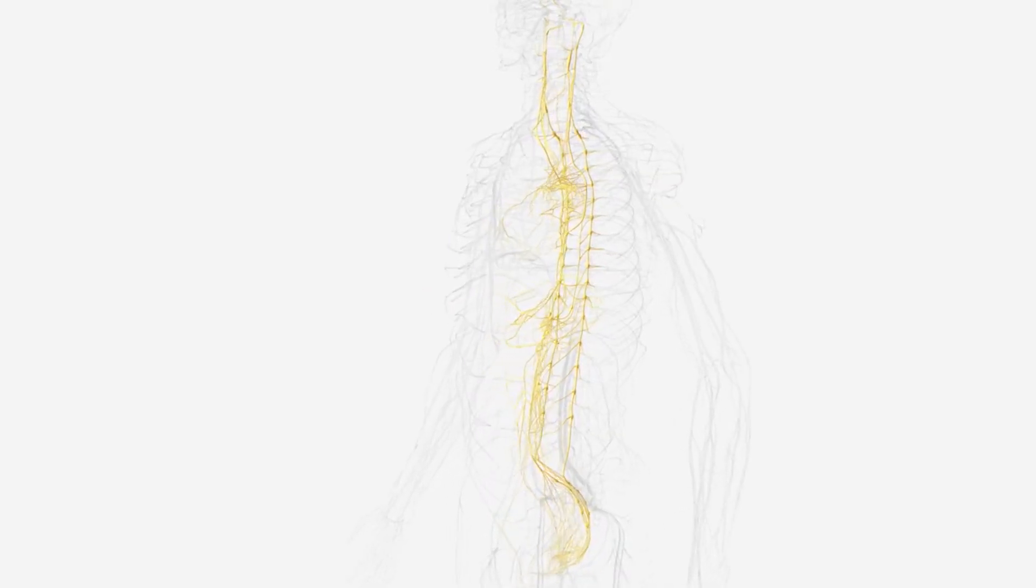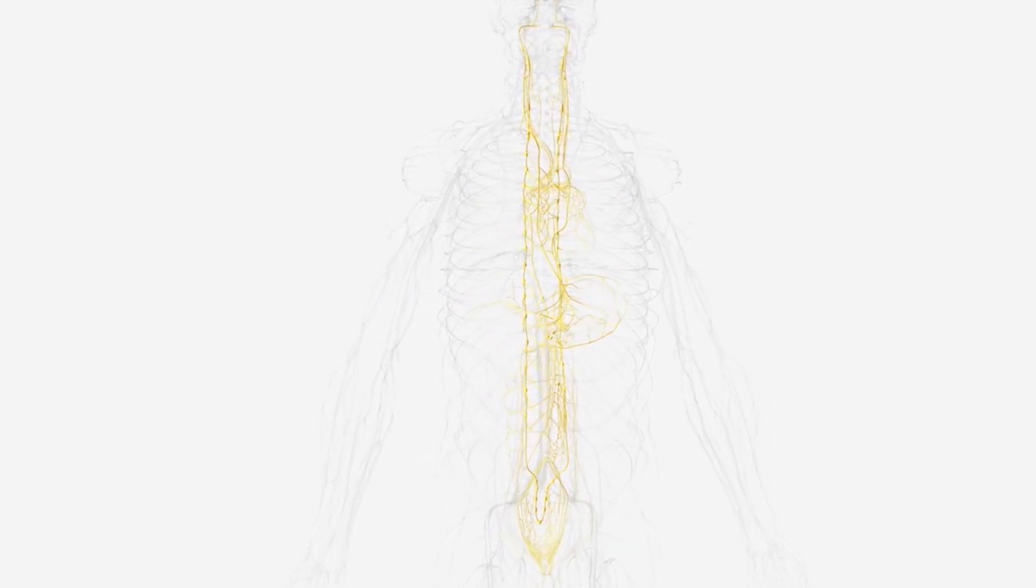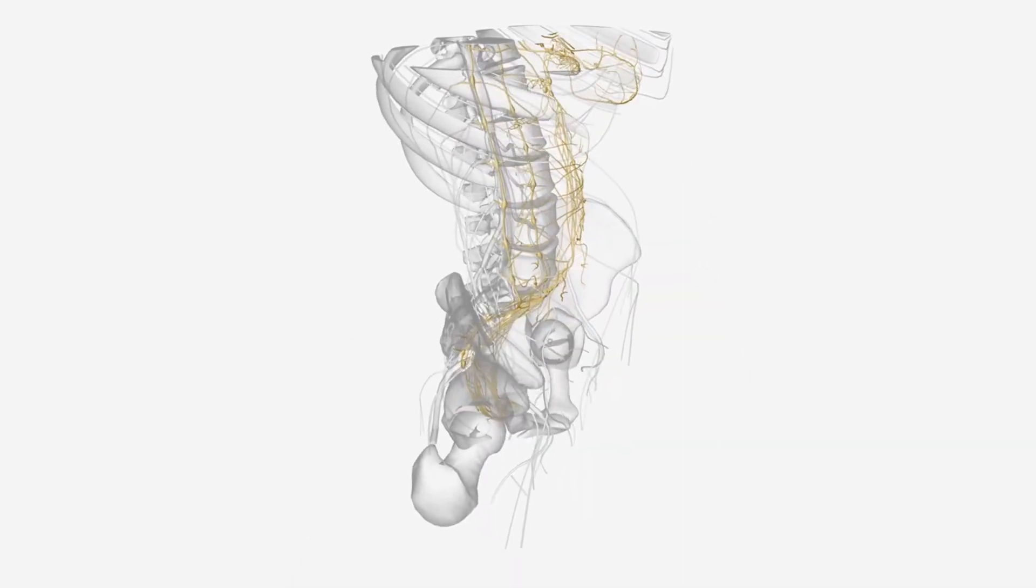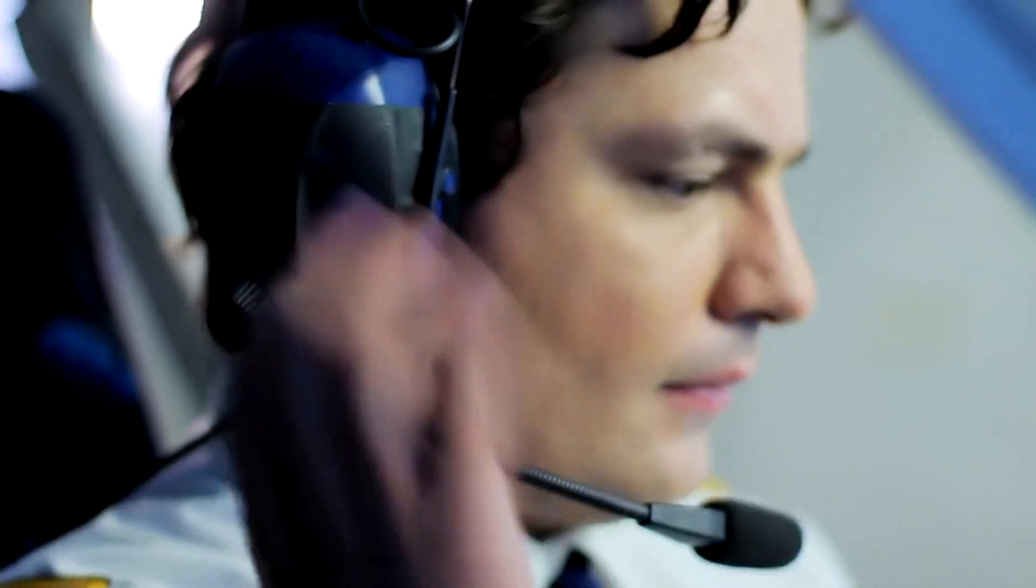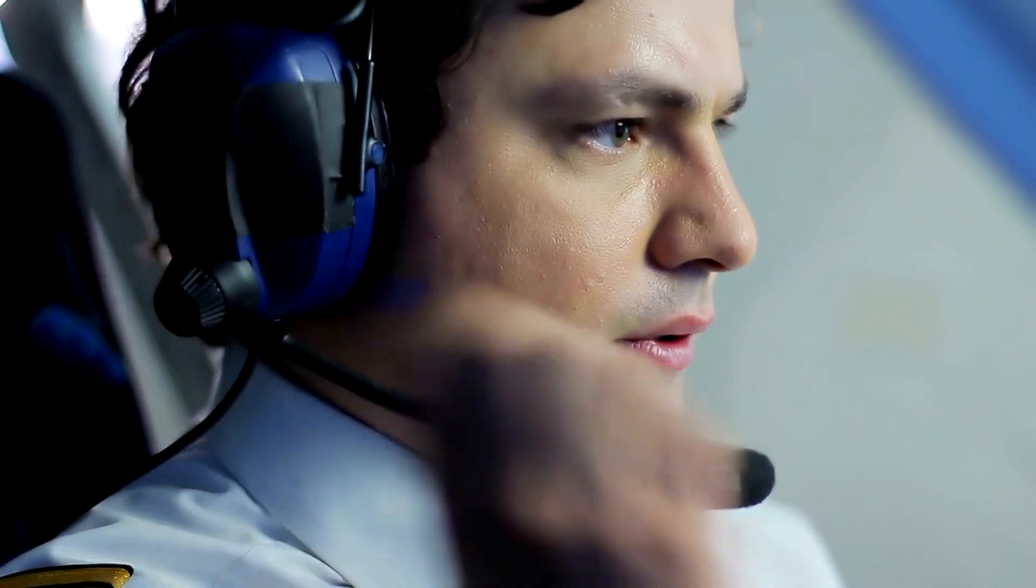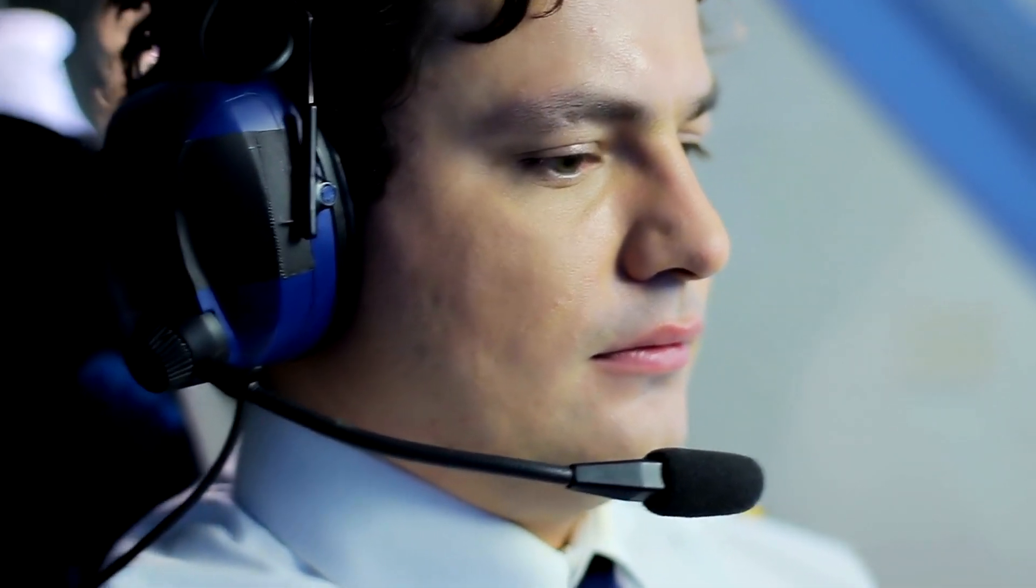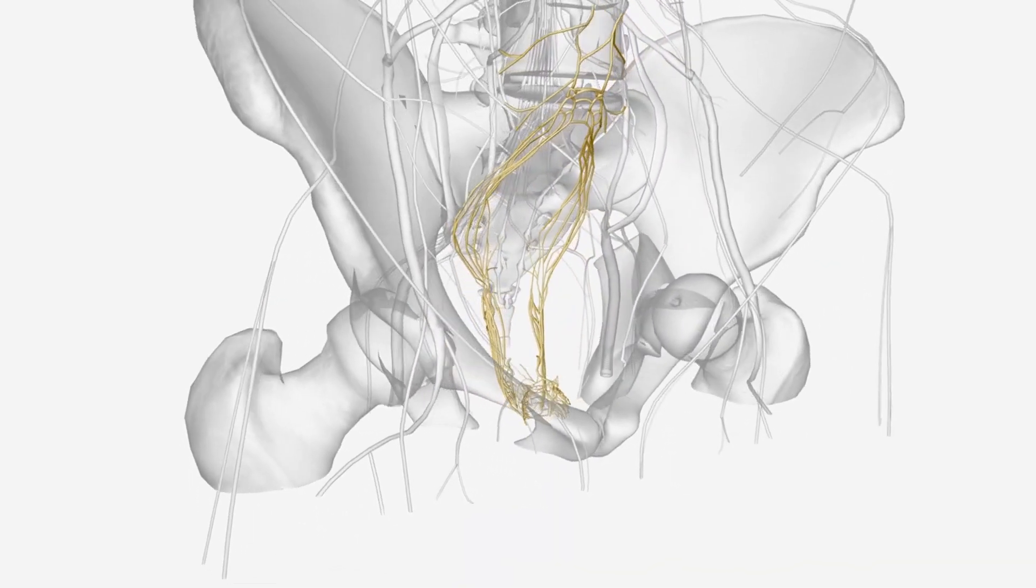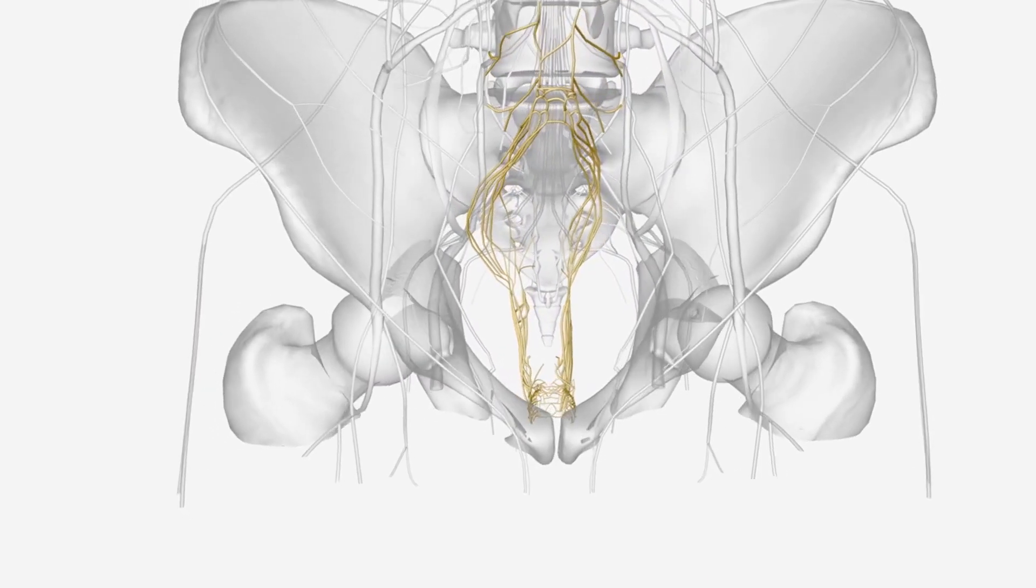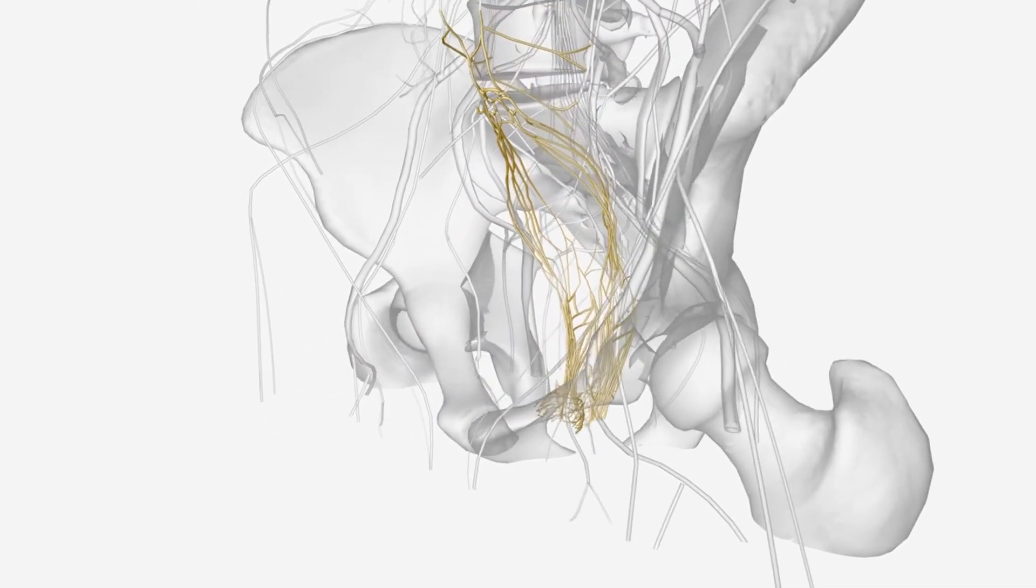The autonomic nervous system controls functions like heart rate, digestion, and respiratory rate. It's further divided into the sympathetic and parasympathetic nervous systems. The sympathetic nervous system prepares the body for fight-or-flight responses during stressful situations by increasing heart rate and blood flow to muscles. The parasympathetic nervous system, on the other hand, promotes rest and digest responses, helping the body conserve energy and maintain homeostasis.